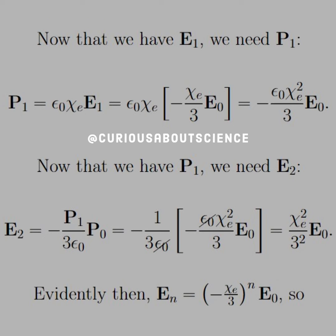So again, epsilon not cancels, and we're left with the square relation here. And this square relation for E2 will help us combine this into En equals negative chi E over 3 to the n times E0.